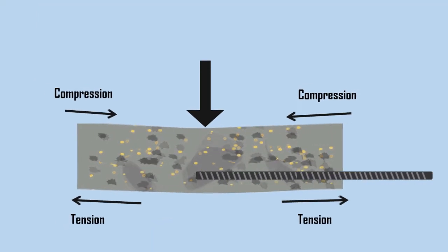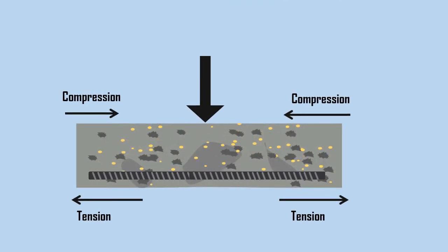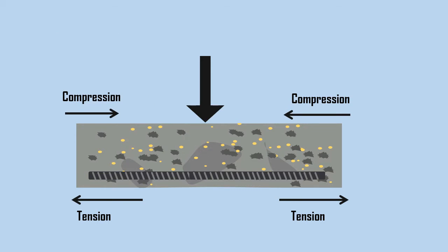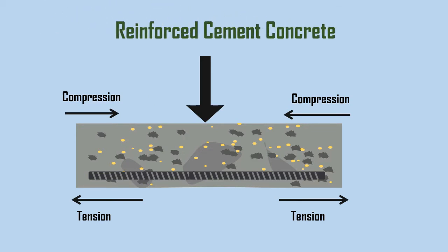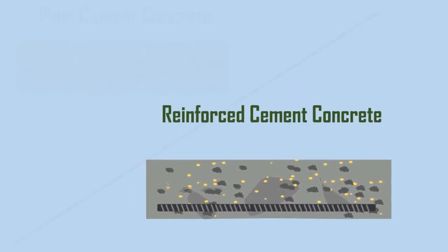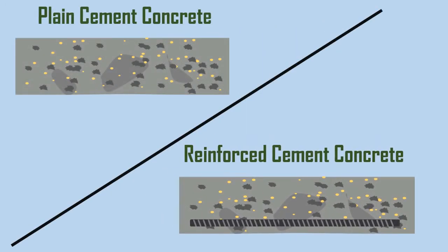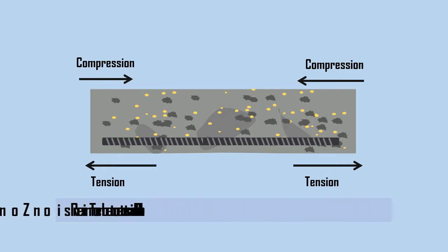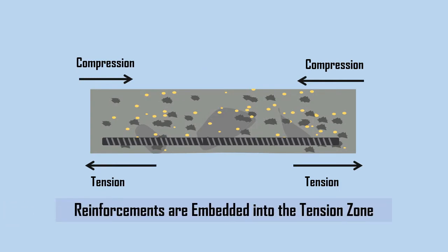To strengthen the concrete section in tension, reinforcement steel is embedded into the concrete. This composite section is called Reinforced Cement Concrete. The reinforcing steel also imparts ductility to the concrete, which is primarily brittle. The reinforcements are embedded into the tension zone of the section to counteract the tension force acting in the section.